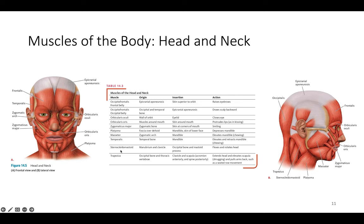The sternocleidomastoid runs down the neck with its origin at the manubrium and clavicle, running up to the occipital bone and mastoid process. It allows flexion and rotation of the head. The trapezius originates at the occipital bone and inserts at the clavicle, allowing head extension, scapula elevation — a shrugging motion — and pulling the arms back.